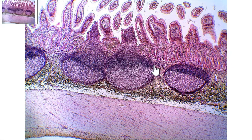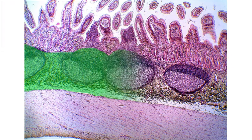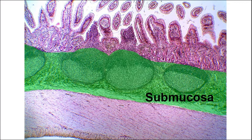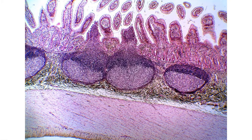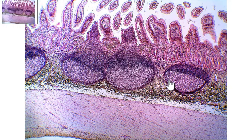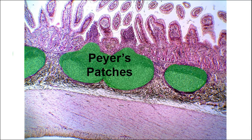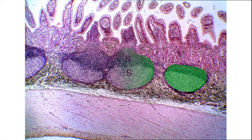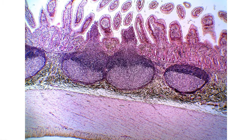Then we come up to this area right here — this is the submucosa. We're going to be able to see a specialized feature in the submucosa: these large circular structures are called Peyer's patches. They help with your immunity and they're only located in the distal portion of the small intestines, hence why they're in the ileum.